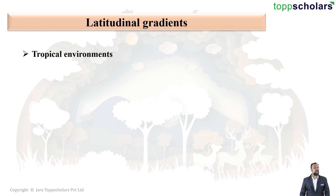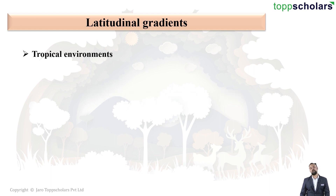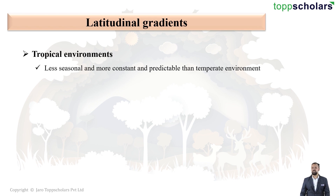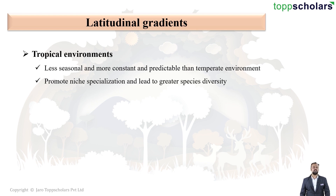In tropical environments — regions lying near the tropics, that is the Tropic of Cancer and the Tropic of Capricorn — there are very less seasonal changes. The environment is much more constant and predictable as compared to a temperate environment. Due to this, it promotes niche specialization and leads to greater species diversity.